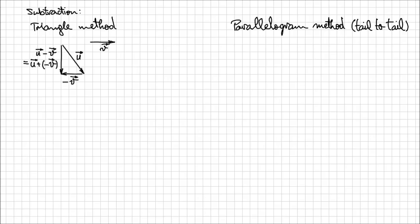Now for the parallelogram method, the tail-to-tail method. So the same vectors that we had before, u and v, translated so that they are in the configuration tail-to-tail. The resultant vector w is u minus v, pointing towards u. So basically, subtraction can be reduced to a problem of addition of vectors.